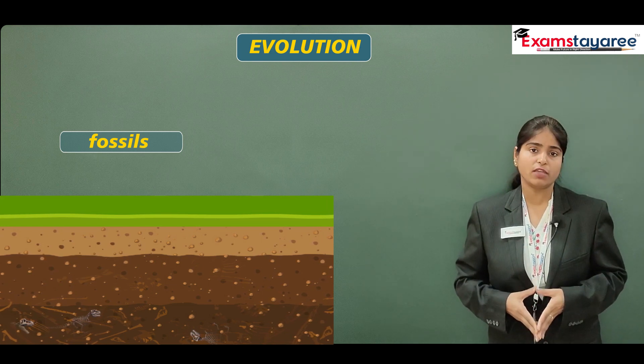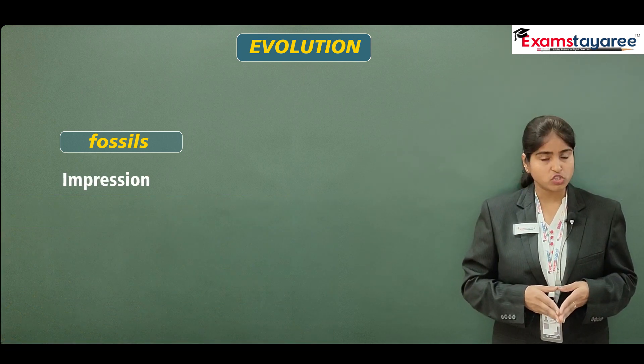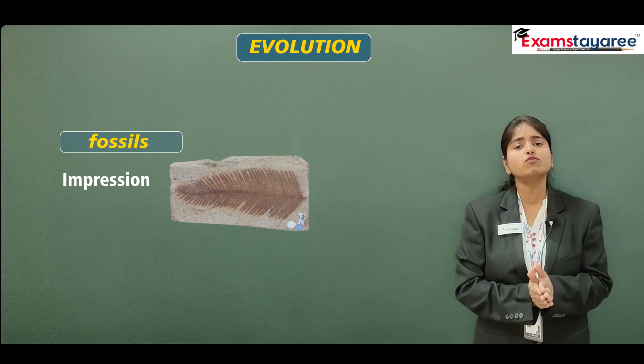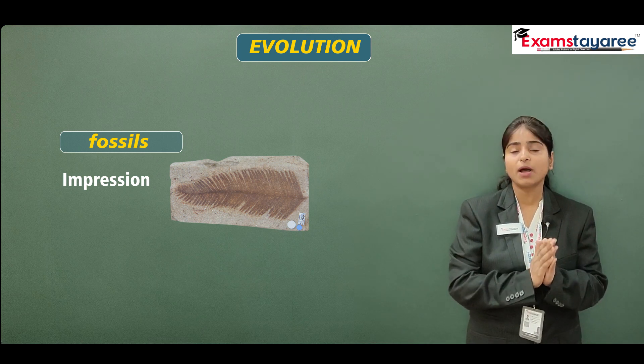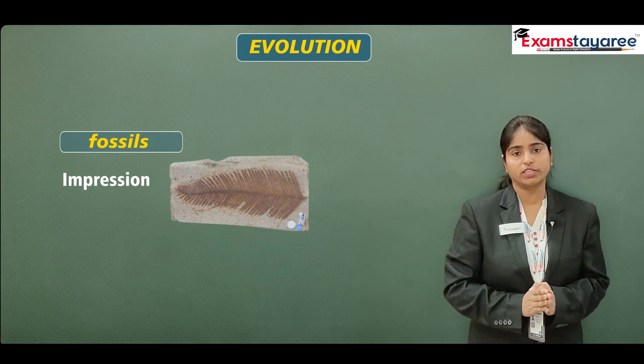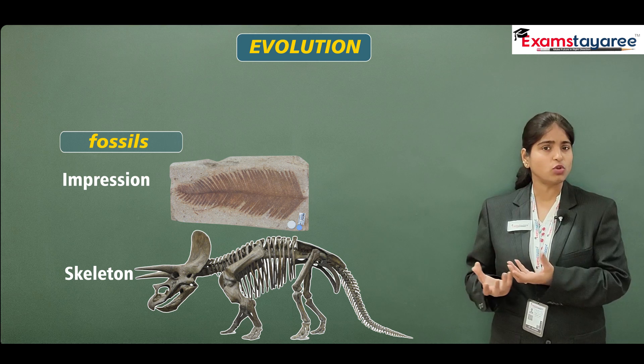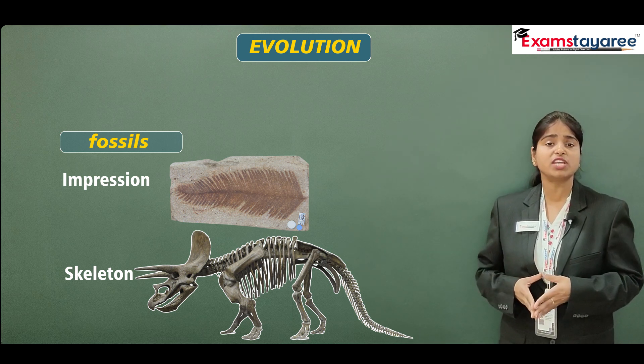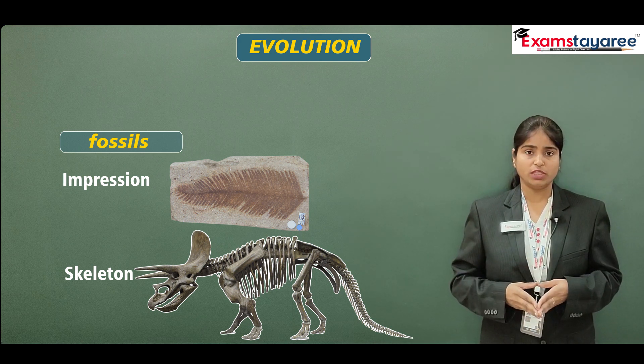Fossils milte do taray ke form mein hume milte hai. First one is in form of impression. Is case mein jitne bhi soft tissues ya soft forms hota hai, woh sare ke sare decay or decompose ho jate hai aur woh sirf apne impressions ko chhod dete hai. Second one is either in the form of parts like teeth or the bones. Ye hard parts hota hai humari body ke hard substances hota hai, joh easily decompose nahi hota hai.